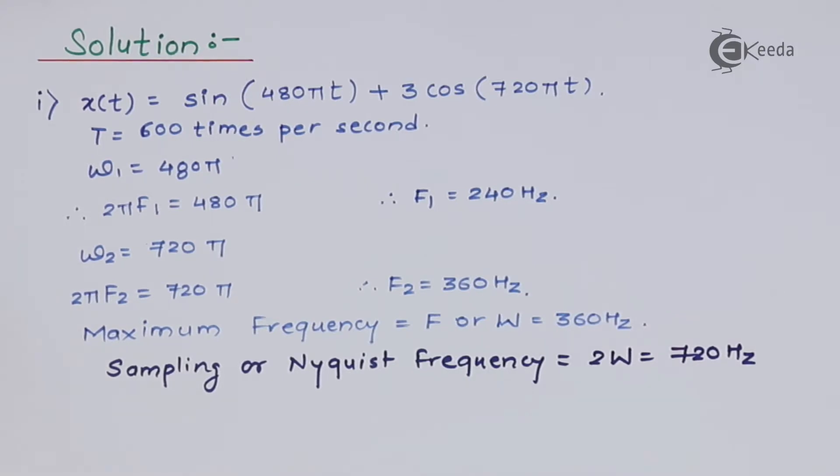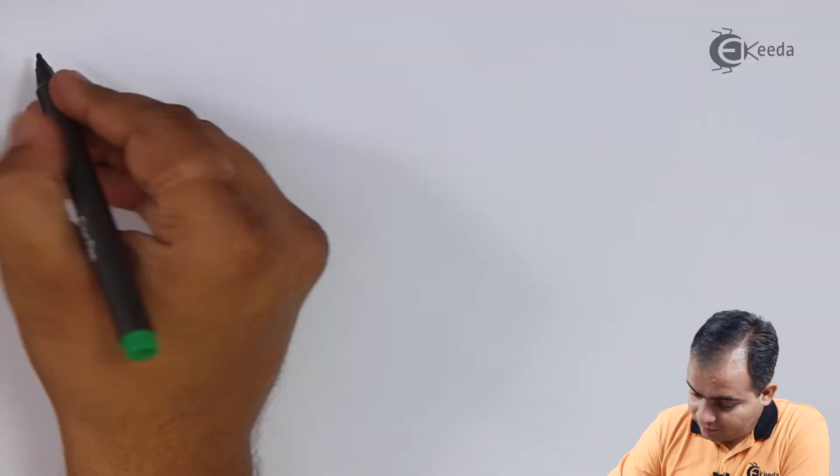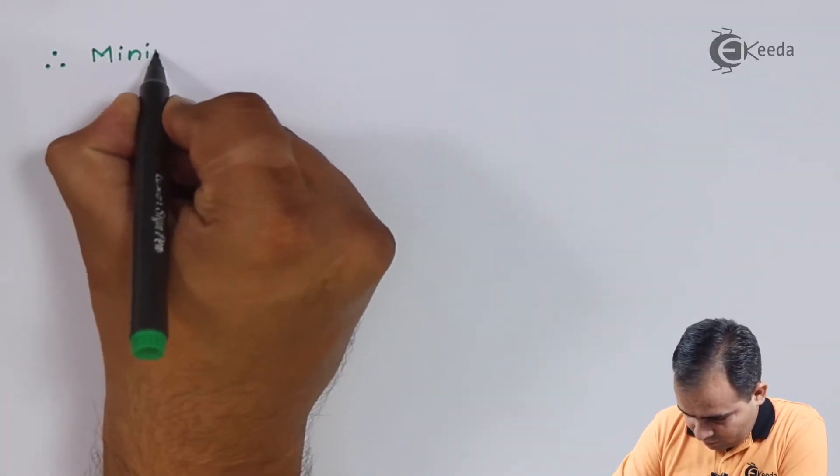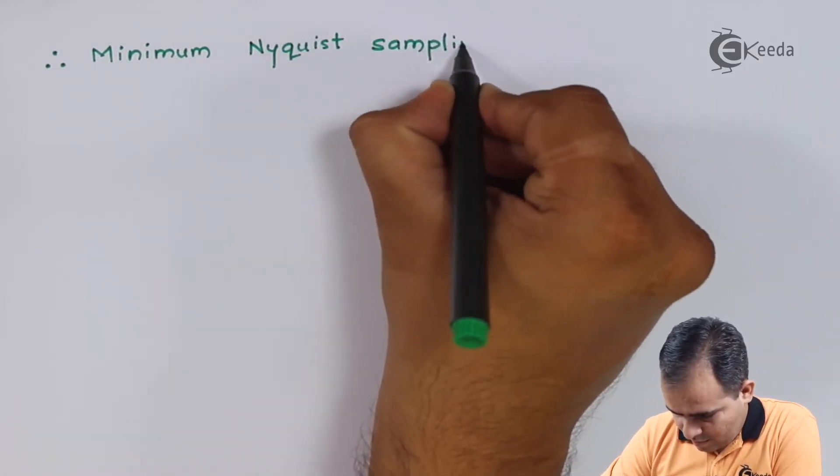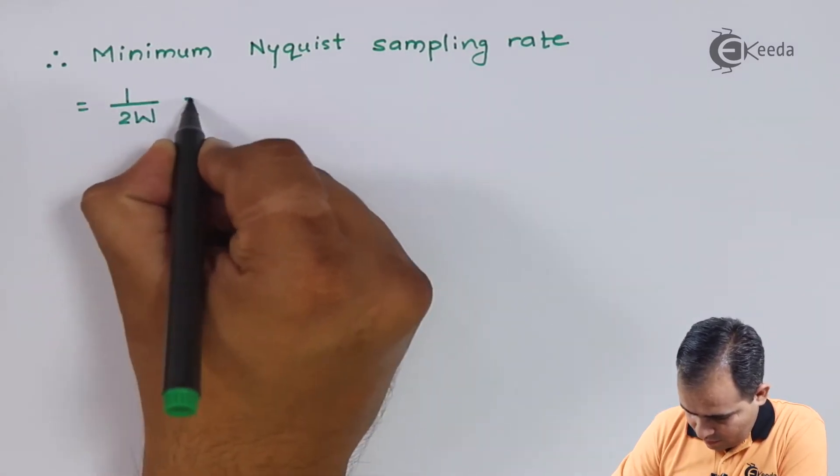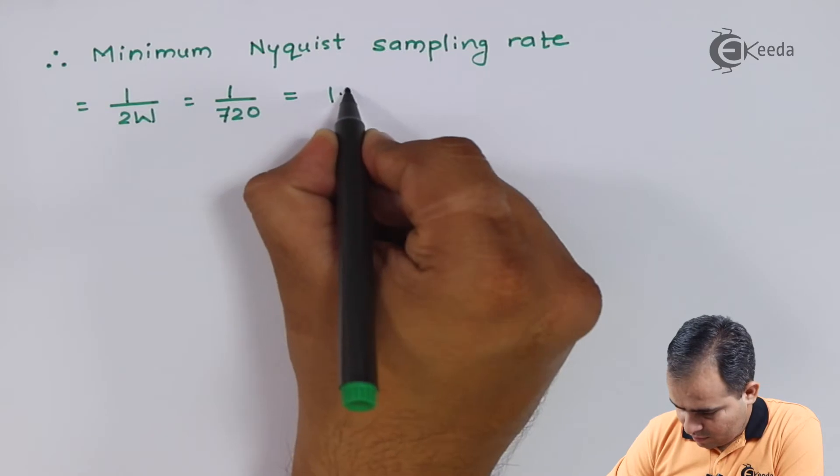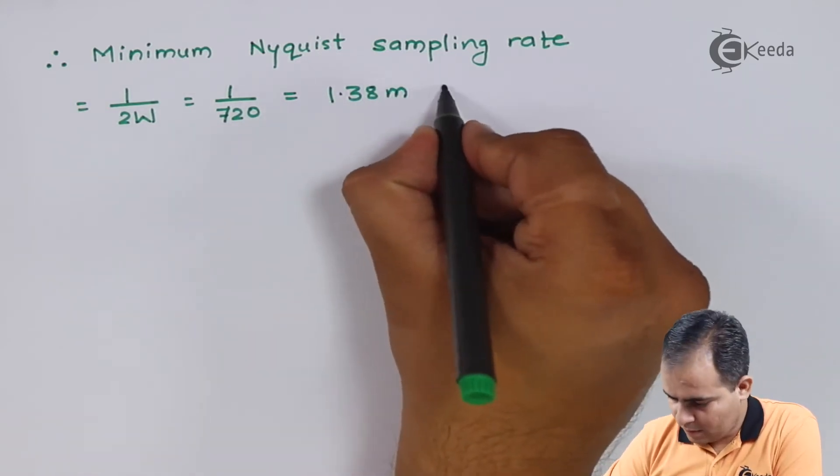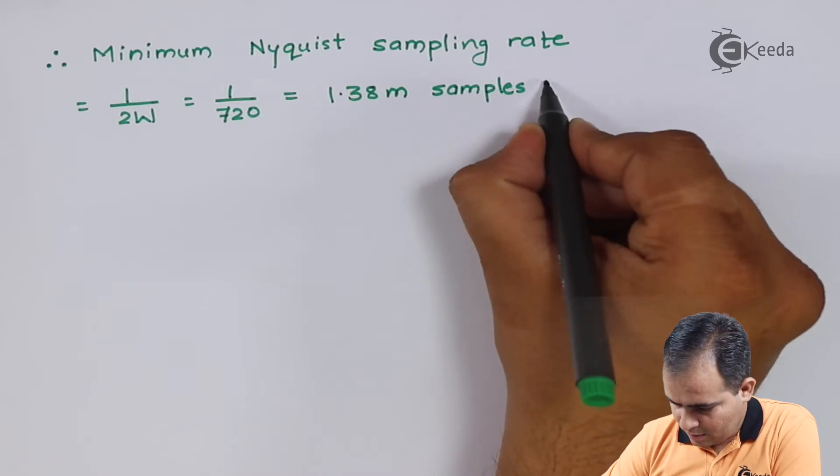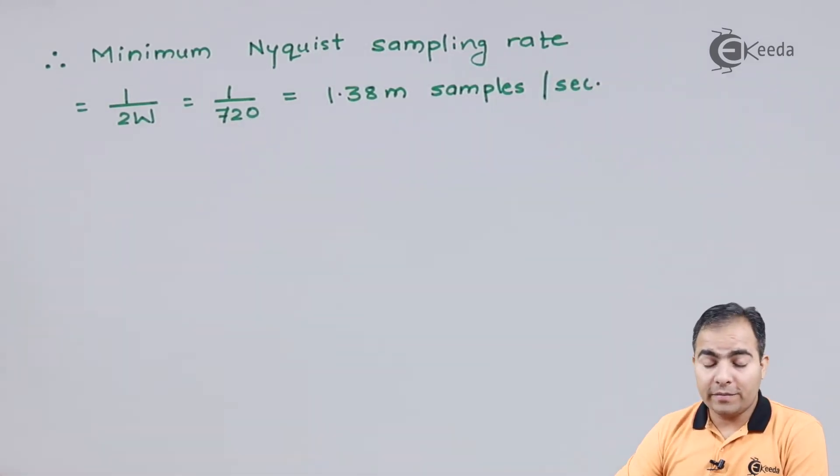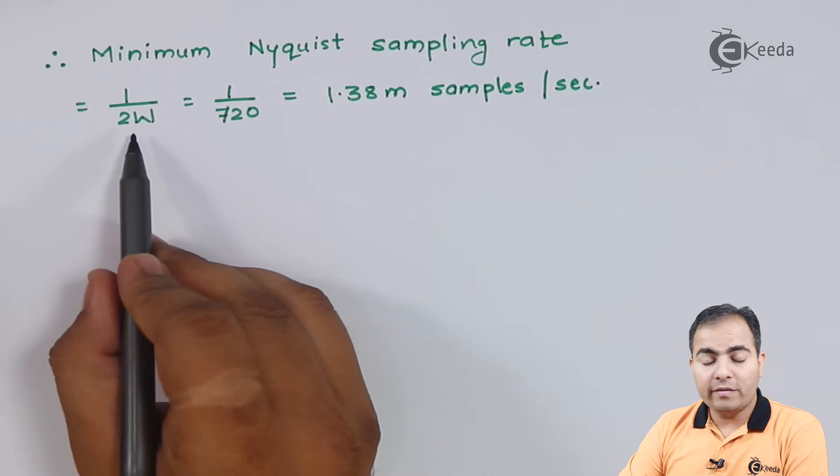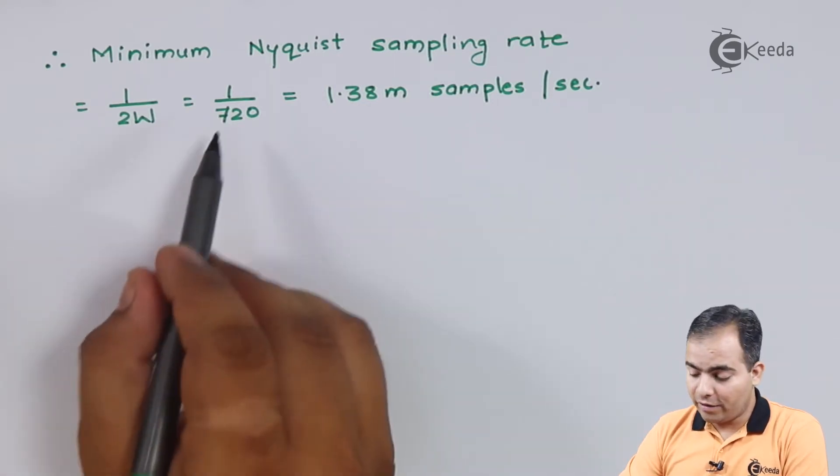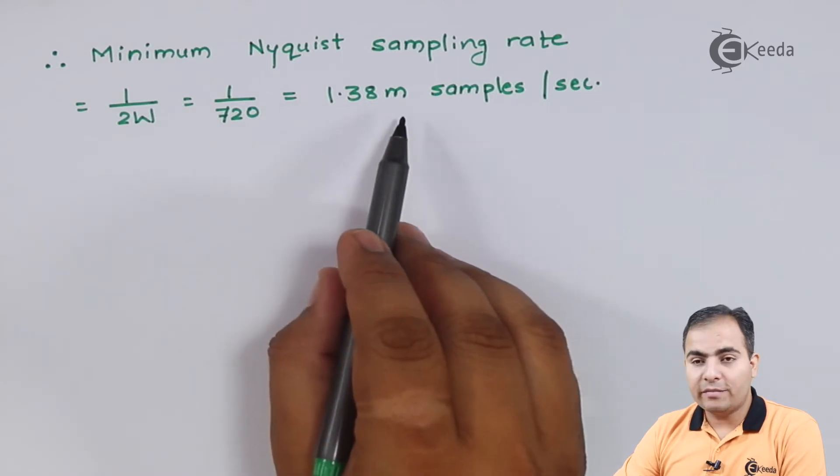Now I want to calculate the Nyquist rate. The Nyquist rate is always the reciprocal of Nyquist frequency. So the minimum Nyquist sampling rate value is 1 upon 2w. The 2w value is already calculated as 720, and 1 upon 720 is 1.38 millisamples per second.